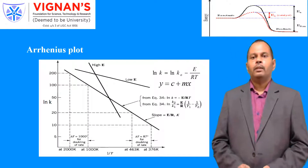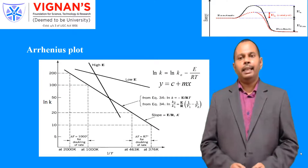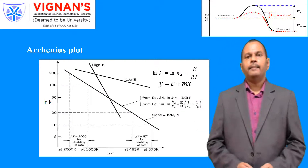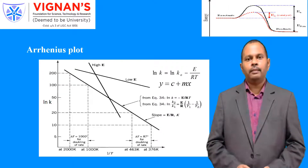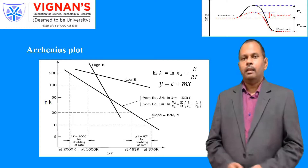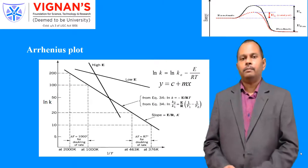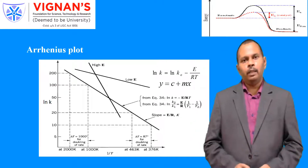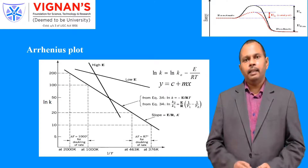This is the Arrhenius plot. After applying the natural logarithm to the Arrhenius equation, you obtain: ln K = ln K₀ − (E/R)(1/T). This is of the form Y = mX + C, where Y is ln K, X is 1/T, and slope is −E/R (a negative slope). When you plot ln K versus 1/T, you obtain a straight line with a negative slope. A high slope corresponds to high activation energy and a low slope to low activation energy. With the Arrhenius plot, you can find the frequency factor K₀ and the activation energy from experimental rate constant versus temperature data.